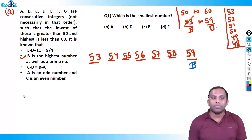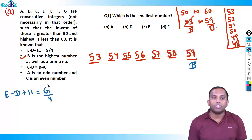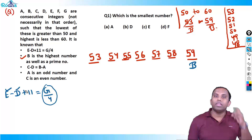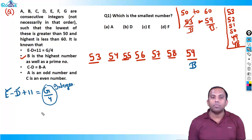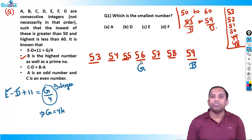Now let's use the first condition: E minus D plus 11 equals G divided by 4. That means G must be divisible by 4, because E and D are both integers and 11 is also an integer — so G divided by 4 must be an integer. Among our values, only 56 is divisible by 4. So G has to be 56.